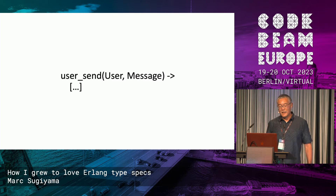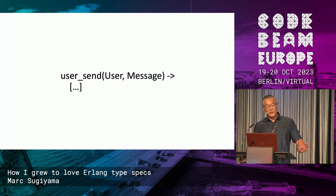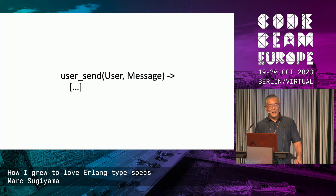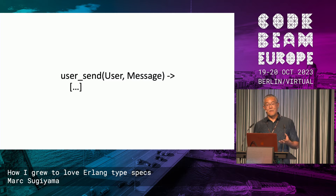We can maybe get a hint by looking at where the function is defined. Now it's a little bit clearer — we know that the first argument is a user and the second argument is a message. But what types are these? Is the user a user ID? Is it some sort of record or a map? And what is the message — is it a list, an iolist, and so forth?